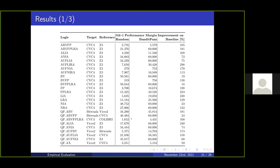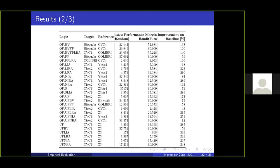I have a few tables of results. On this column I have the logic under consideration, here the target solver for this particular logic, here the reference solver, here the PAR-2 margin score of random fuzzing, then here the PAR-2 margin score of BanditFuzz, and here the improvement over the baseline. Across both tables, BanditFuzz very clearly improves on random fuzzing very consistently across all these logics.